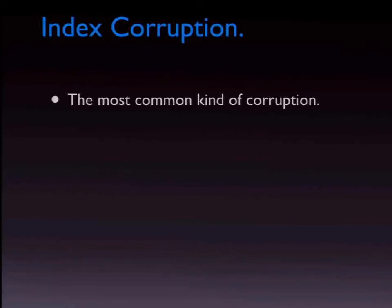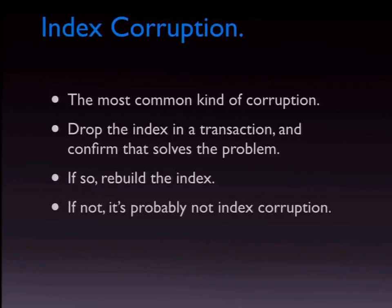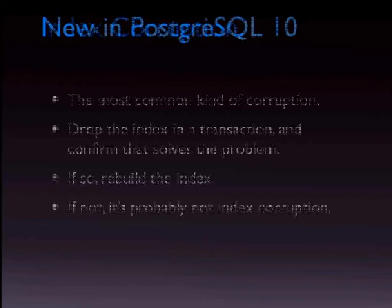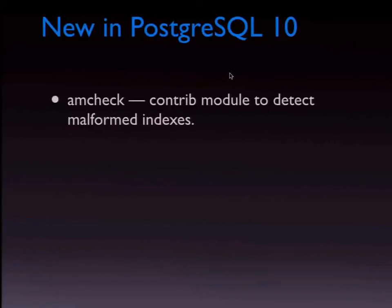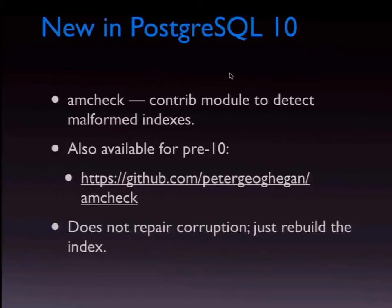The most common kind of corruption we run into is index corruption, because indexes have a lot more internal structure than the data does. The easiest thing to do is drop the index in a transaction and see if that fixes the problem — it very frequently does. If it does, just rebuild the index. In Postgres 10, there's a new contrib module called amcheck to detect malformed indexes. You can also get it from Peter Geoghegan's GitHub repo for pre-10. It doesn't repair the corruption, but it tells you where it is — that's what REINDEX or CREATE INDEX CONCURRENTLY is for.